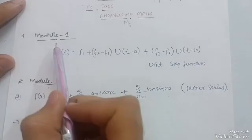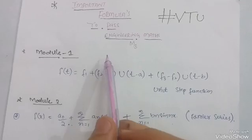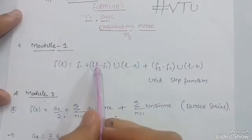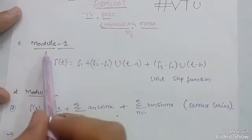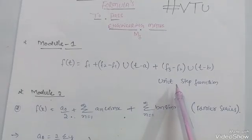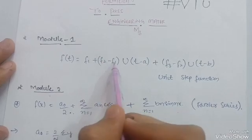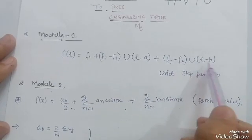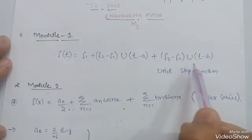As in my earlier video on how to pass the M3 examination — I will give you the link in the description — I have taken important formulas from each module. So, for Module 1, there is a formula based on the unit step function: f(t) = f1 + (f2 − f1)·u(t − a) + (f3 − f2)·u(t − b). Just refer to this one formula to cover the unit step function portion.